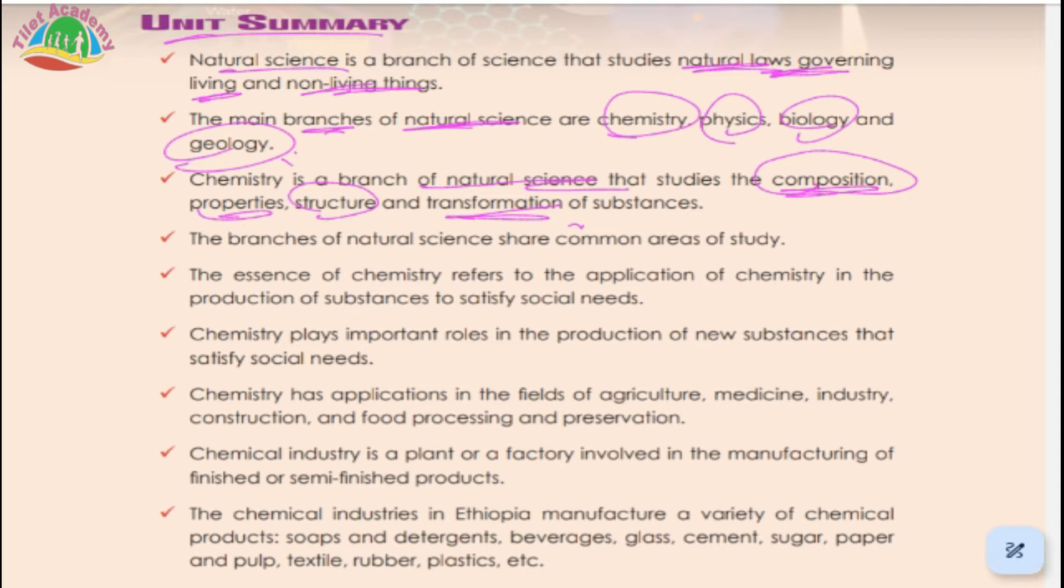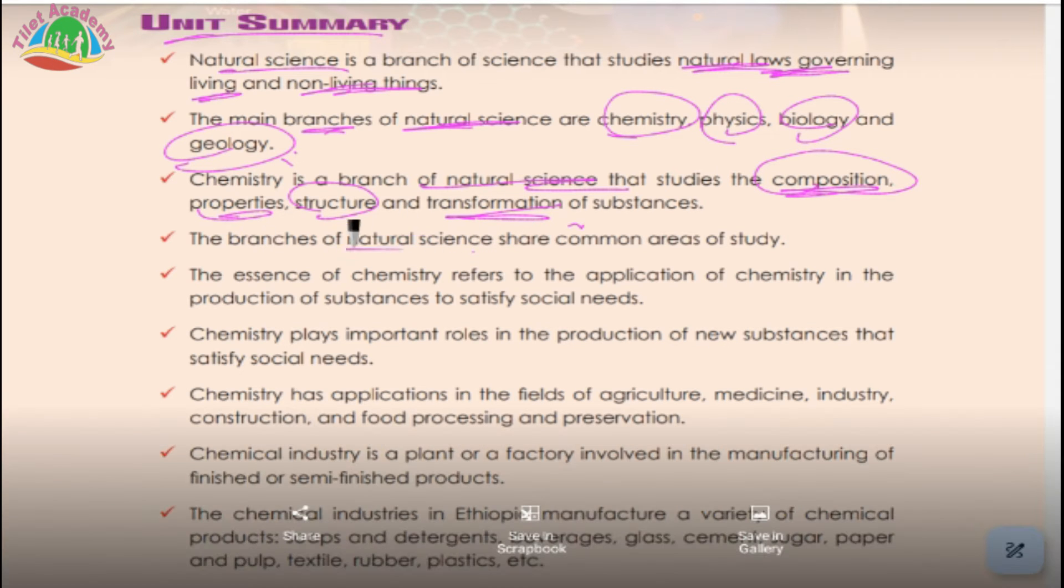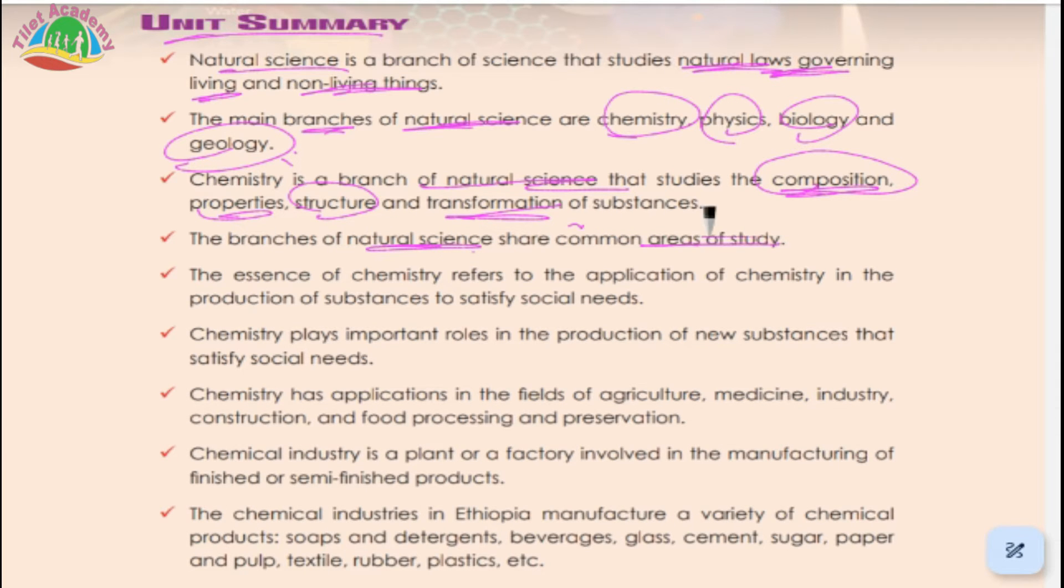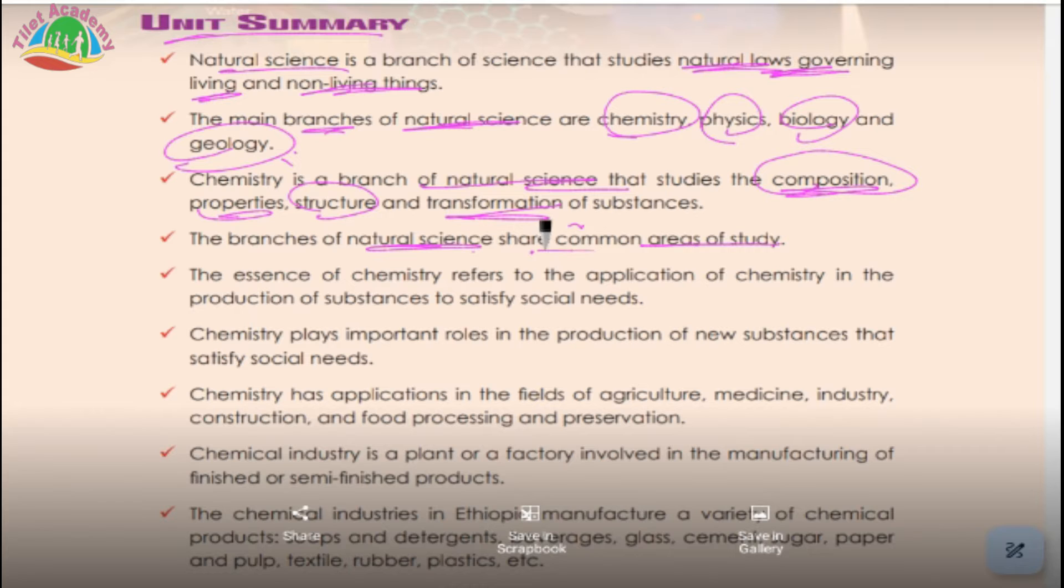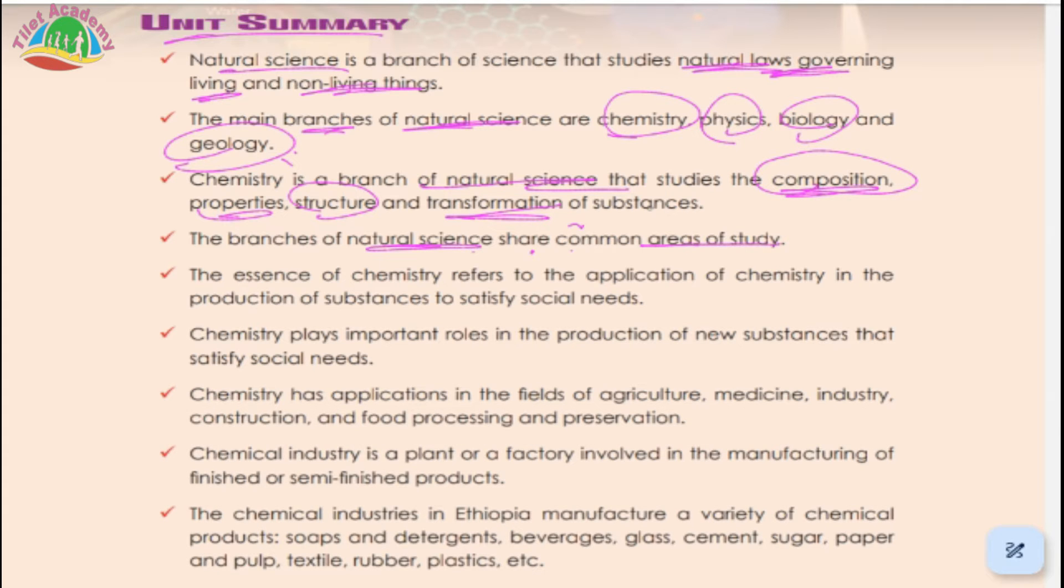The branches of natural science share common areas of study. You might have biochemistry, geological chemistry, and physical chemistry. The essence of chemistry refers to the application of chemistry in the production of substances to satisfy social needs.